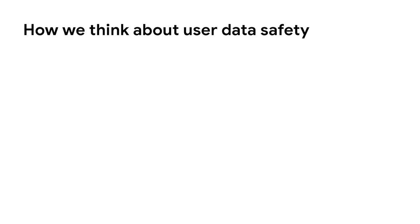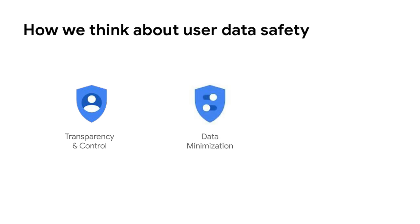Keeping users safe is core to what we do on Android and Google Play. As we iterate on our products and policies, we continue to build on an existing foundation that supports user trust. Here are a few of our guiding principles: transparency and controls around what data is accessed by apps across different touch points in a user's journey, and data minimization, which refers to limiting the scope of data that's accessed to what users really need.